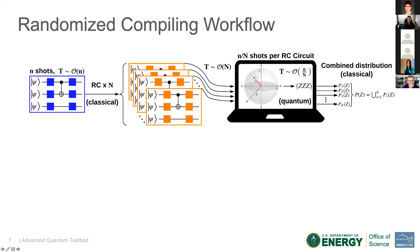So the workflow looks something like this. You take a bare circuit that you want to measure n times. You classically perform RC many times to produce that many different variants of this circuit. Individually, you upload and measure each of these circuits. This step will scale as the number of circuits that you want to measure. However, the measurement step itself is reduced by that same factor because we want to normalize statistics between the bare circuit and all of the RC circuits.